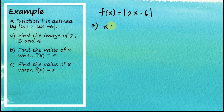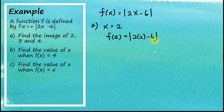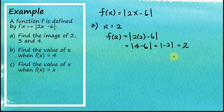When x equals 2, f(2) = |2 × 2 − 6| = |4 − 6| = |−2|. Since the number is negative, the absolute value becomes positive, so f(2) = 2. When the object is 2, the image is 2.